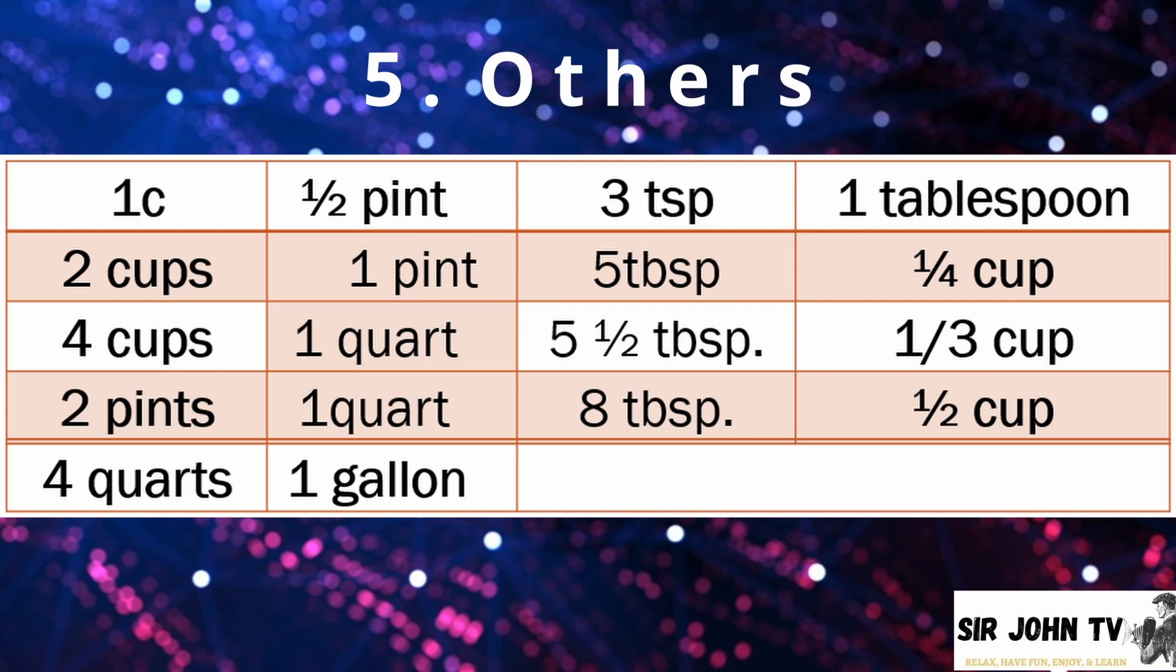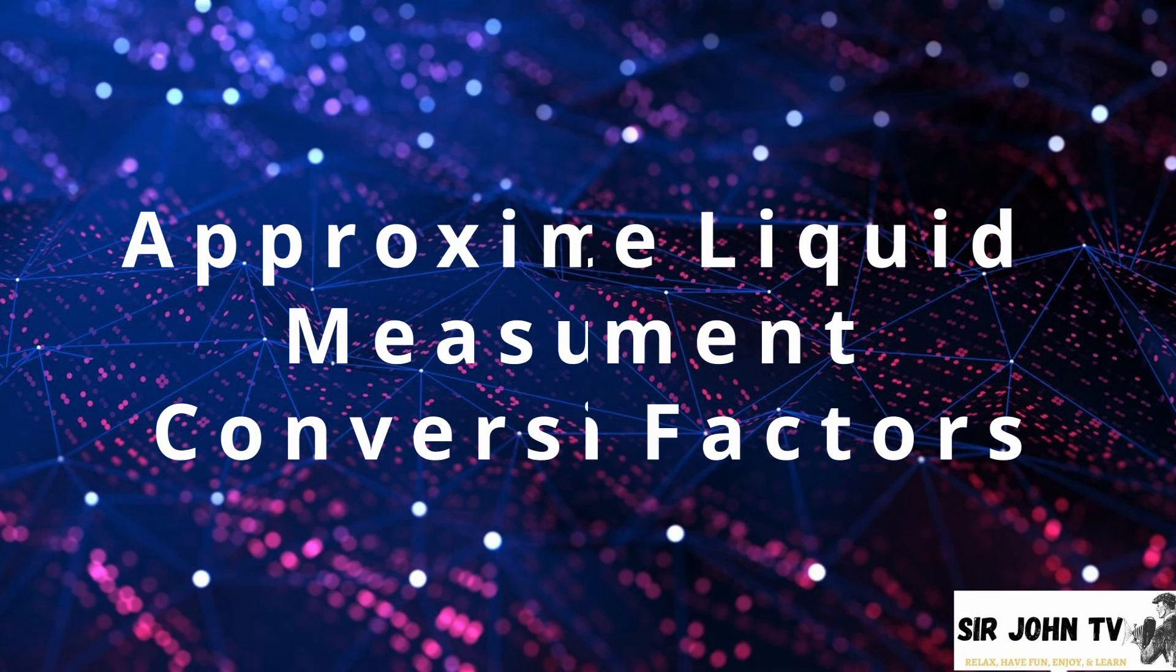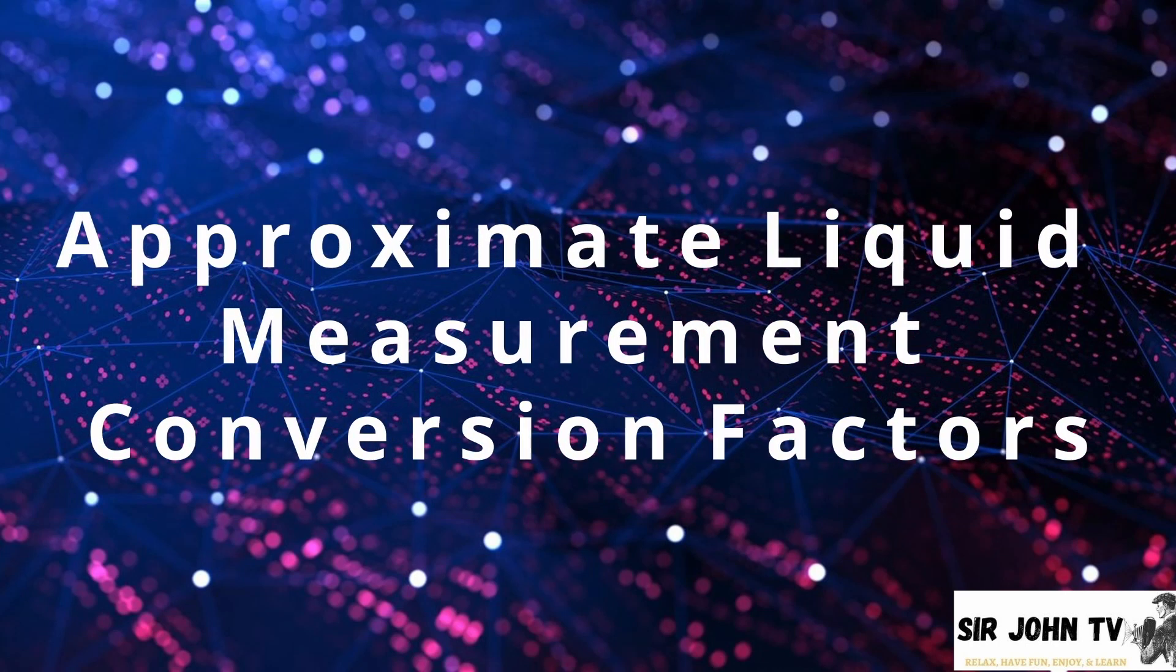Where do we use this? It is commonly used in baking or in any other recipe that uses oven. And here is our last method of recording weights and measurement. And this chart includes the following: 1 cup is equal to 1 half pint. 2 cups is equal to 1 pint. 4 cups and 2 pints is equivalent to 1 quart. While 4 quarts is equal to 1 gallon. On the other hand, 3 teaspoon is equivalent to 1 tablespoon. 5 tablespoon is equivalent to 1 quarter cup. While 5 and 1 half tablespoon is equal to 1 third cup. And 8 tablespoon is equal to 1 half cup.